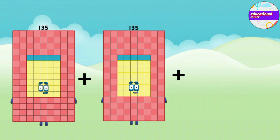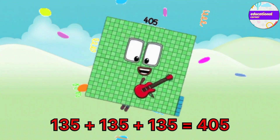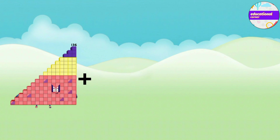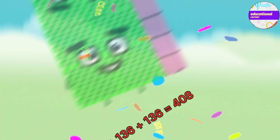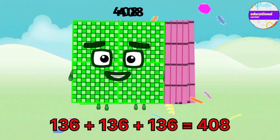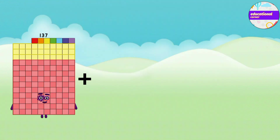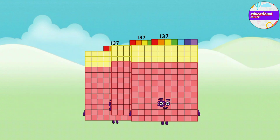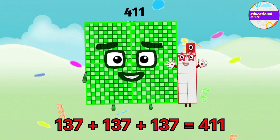135 plus 135 plus 135 equals 405. 136 plus 136 plus 136 equals 408. 137 plus 137 plus 137 equals 411.